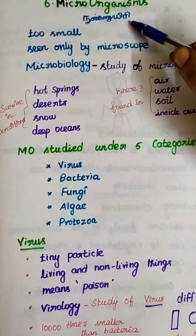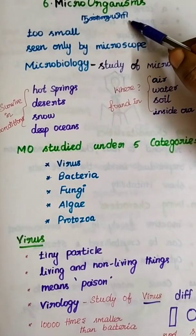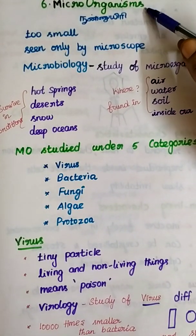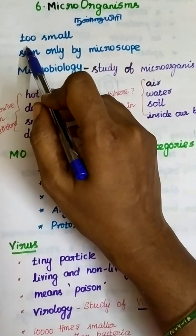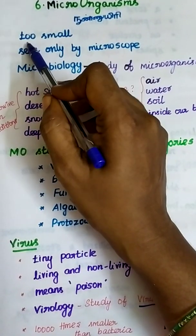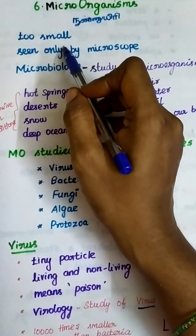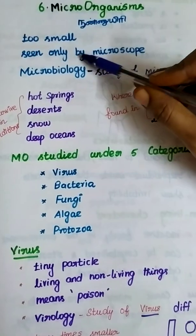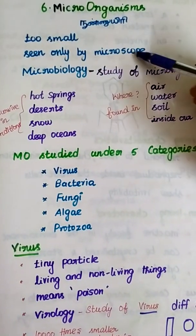Micro-organisms are very, very small and can only be seen by the microscope.